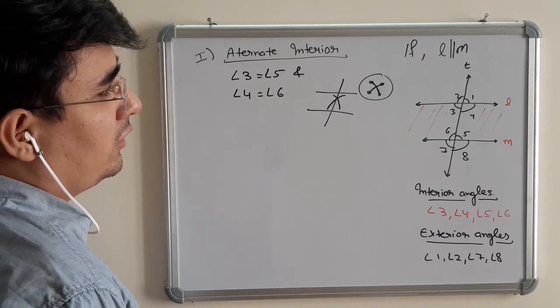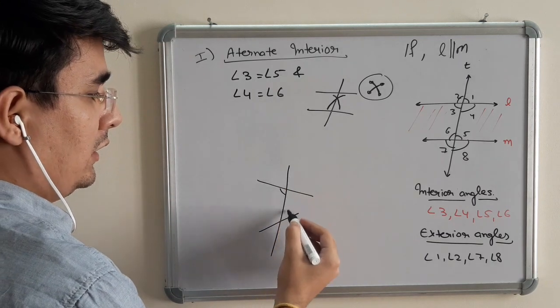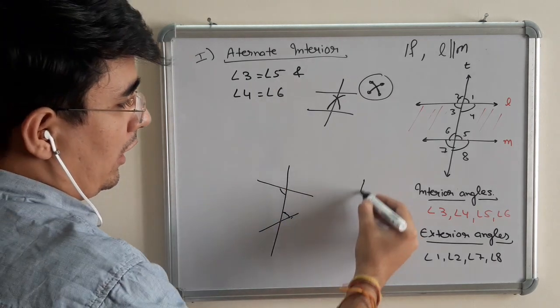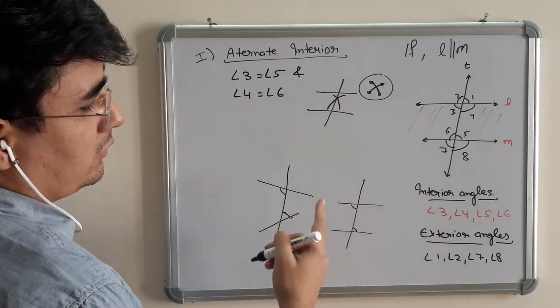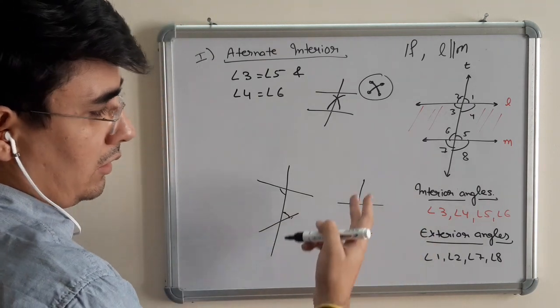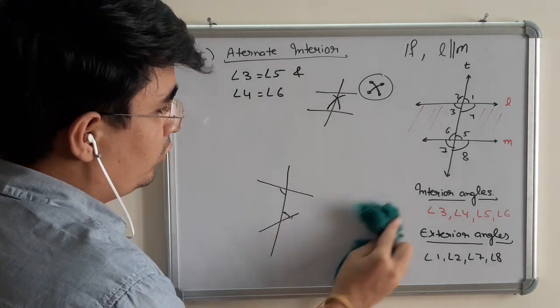You can check it yourself by drawing two non-parallel lines. And see, are they equal? And see, now are they equal? So, just draw two lines which are parallel and draw the transversal. You will get to know whether this is true or not.